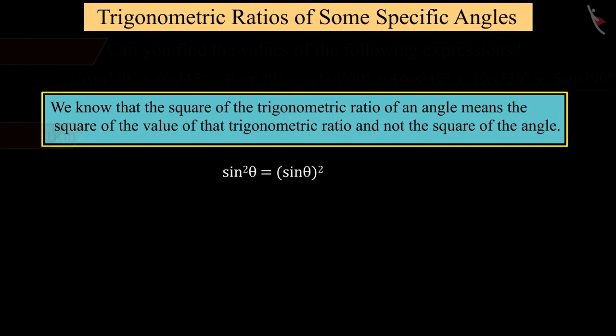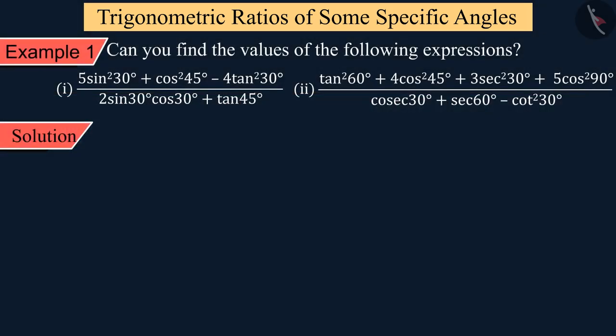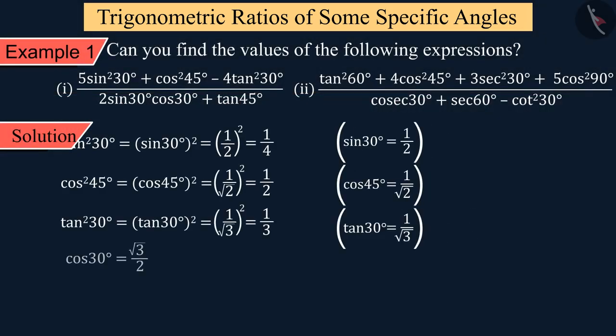We know that the square of a trigonometric ratio of an angle means the square of the value of that trigonometric ratio, and not the square of the angle. Therefore, sin²30° equals the square of sin 30°, which on solving gives 1/4. Similarly, we get the values of the other trigonometric ratios and solve the above equation.